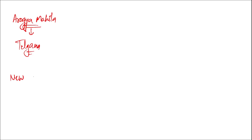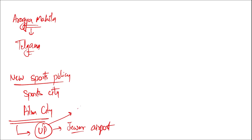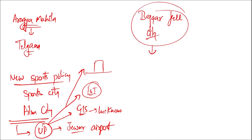A new sports policy was launched in Uttar Pradesh, which also has a sports city, film city, and the Jewar airport under construction. In UP, the Global Investors Summit was held in Lucknow, and the state aims to achieve a $1 trillion economy. It was also stated that high-rise buildings in UP should be covered with beautiful lights to match global city standards. Apart from this, a new initiative called Beggar Free City was launched in Nagpur, Maharashtra.